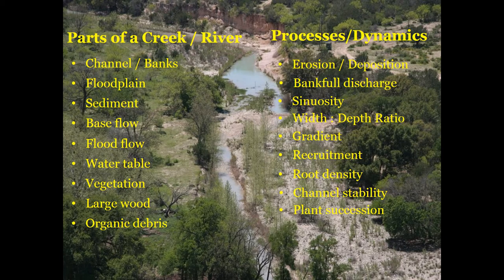In preparation for discussing riparian recovery, let's review the parts of a stream. You'll recall the channel, which is confined by the banks; the floodplain, which is composed of sediments; the normal base flow where the fish live; flood flows — flooding is an important and essential component of the creek and river system; the water table as a part of the creek; the vegetation; and the large woody material, which could include fallen or dead trees, and all other organic litter and debris.